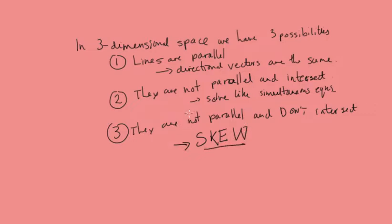In three-dimensional space, if you've got two vector lines and they're not parallel and they don't intersect, we call those two lines skew. In two-dimensional space, we only have the two possibilities of the lines being parallel, and if they're not parallel they will at some point intersect. But in three-dimensional space we have this new possibility that the two lines exist completely separate from each other and will never intersect.